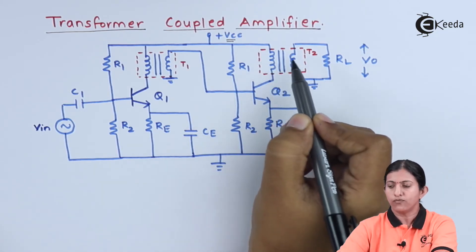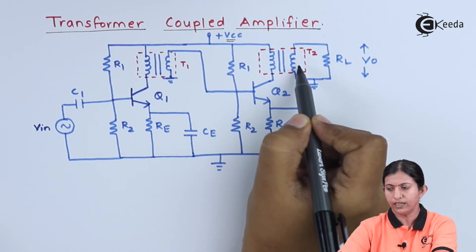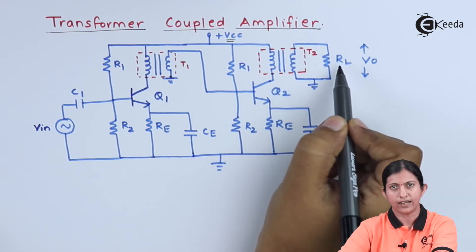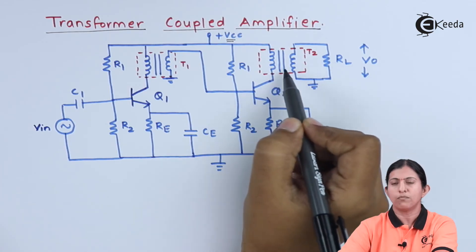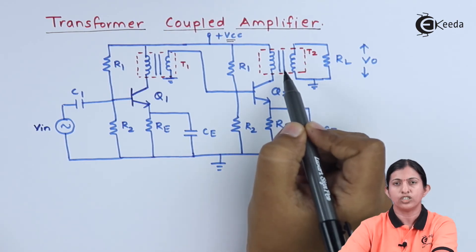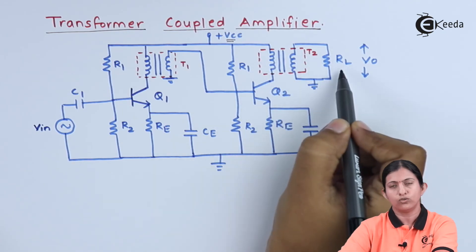The energy flows from the primary winding to the secondary winding and is then applied to the load resistor RL. If we adjust the number of turns properly, maximum energy will flow from the transformer to the load resistor.